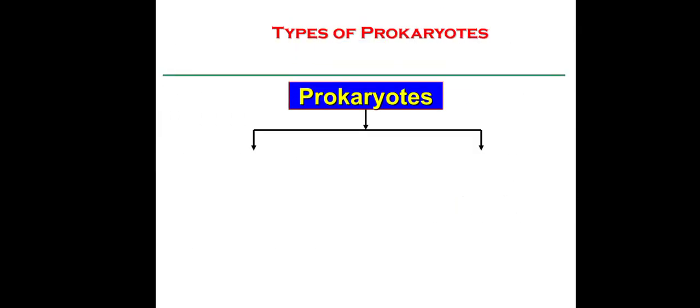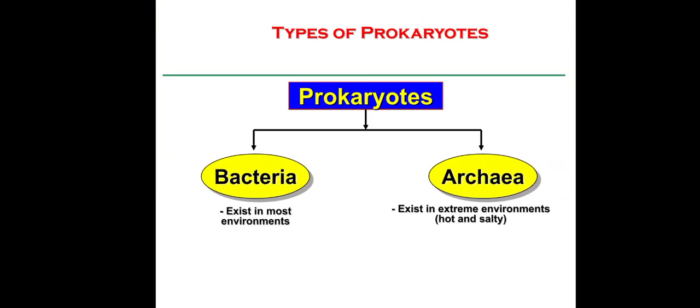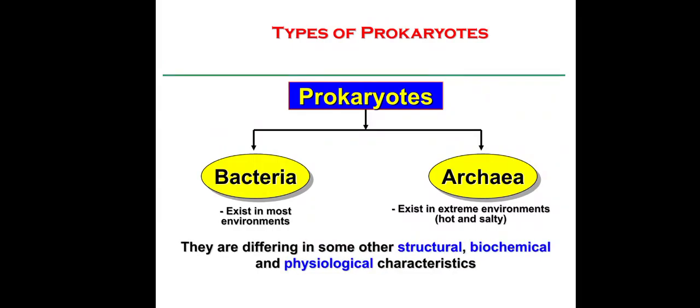Prokaryotes are mainly of two types: bacteria and archaea. Bacteria exist in most environments — we can find bacteria in air, water, soil, everywhere, and even inside the human intestine, where they help in digestion. Archaea are a different kind of prokaryote that exist in extreme environments, like very hot, very salty, or very cold environments. Bacteria and archaea are chemically different in structural, biochemical, and physiological characteristics.